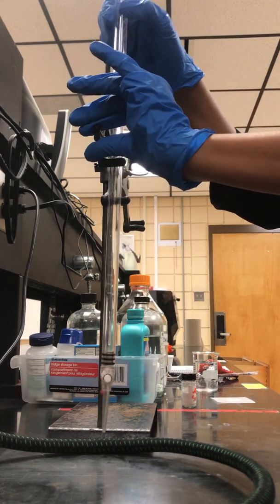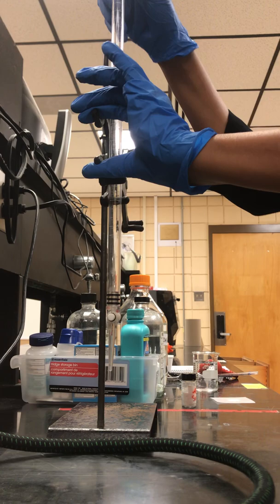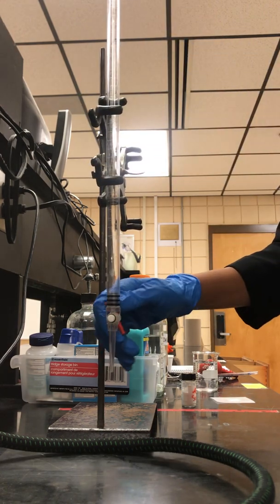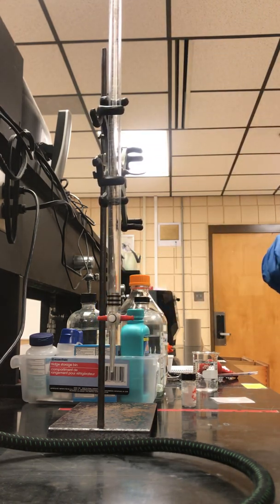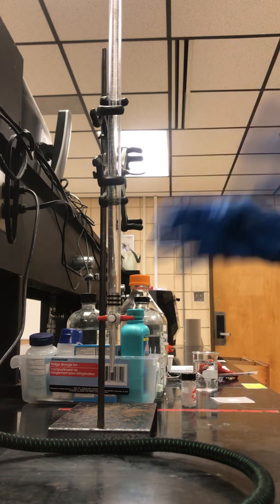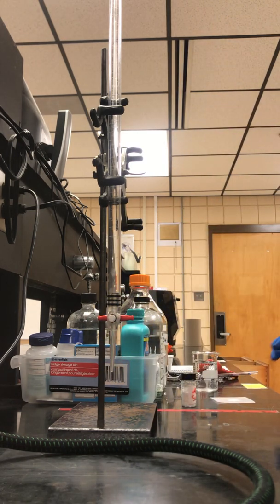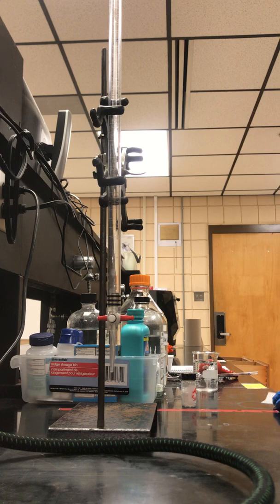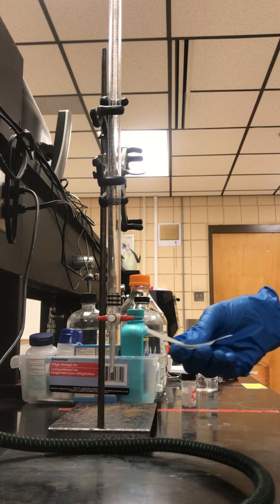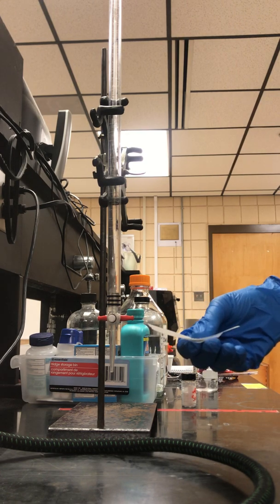You're going to obtain your burette from shelf I. You just pinch the sides and set it up. You want to close the stopcock so that once you finally set it up nothing comes out.